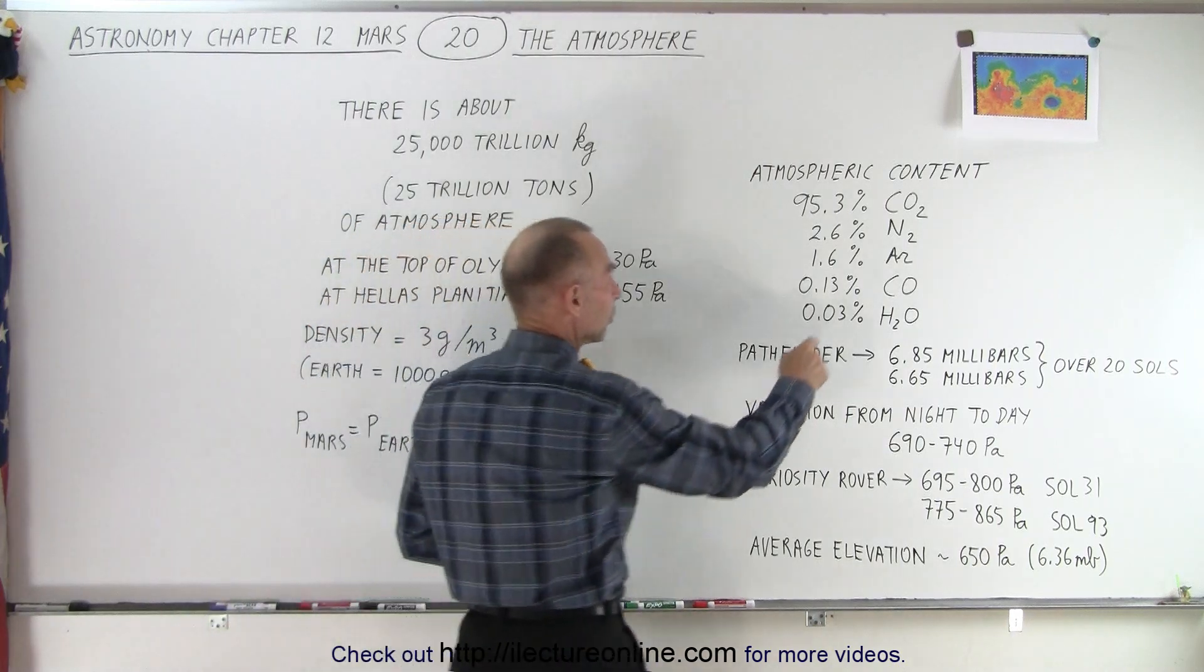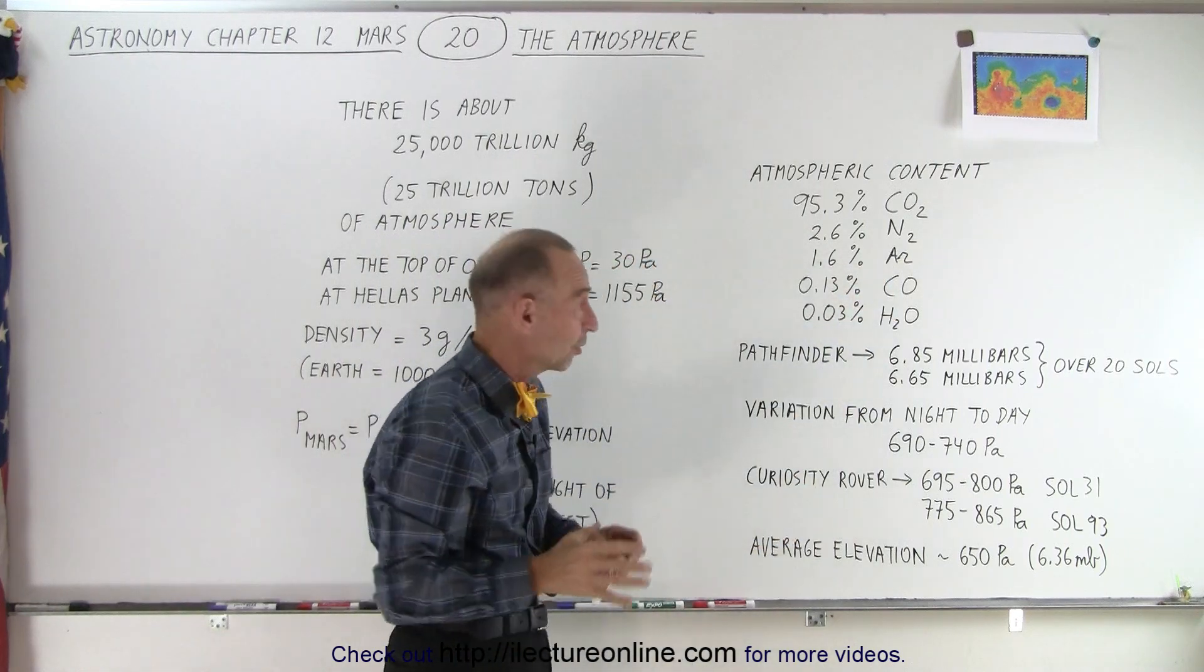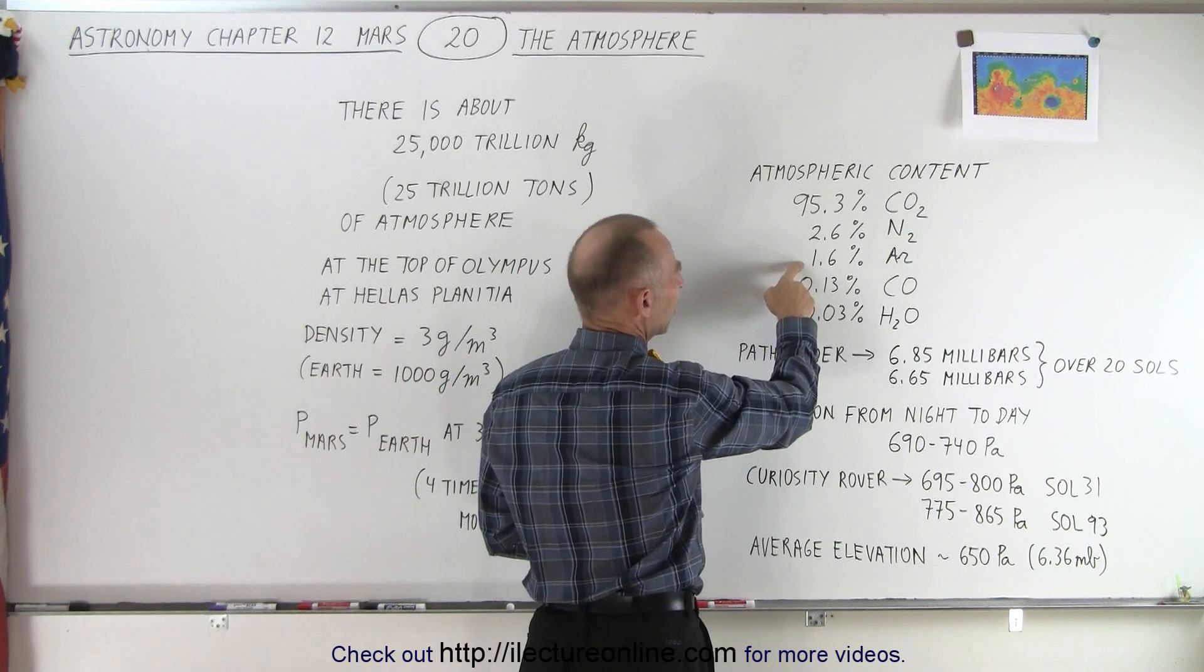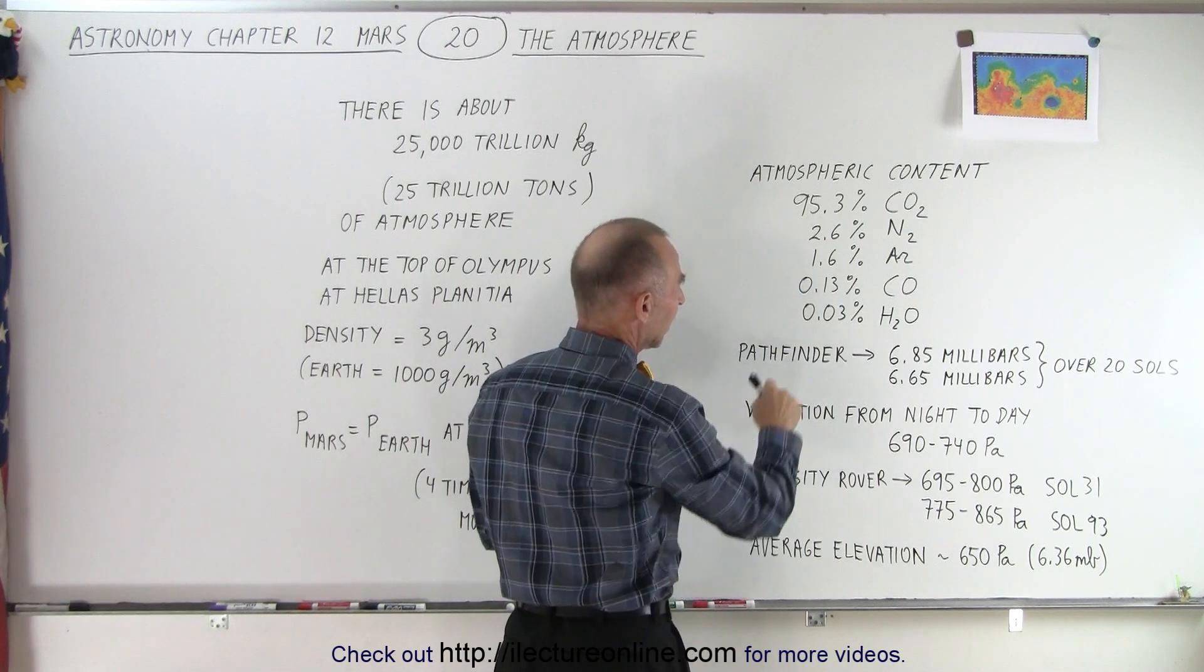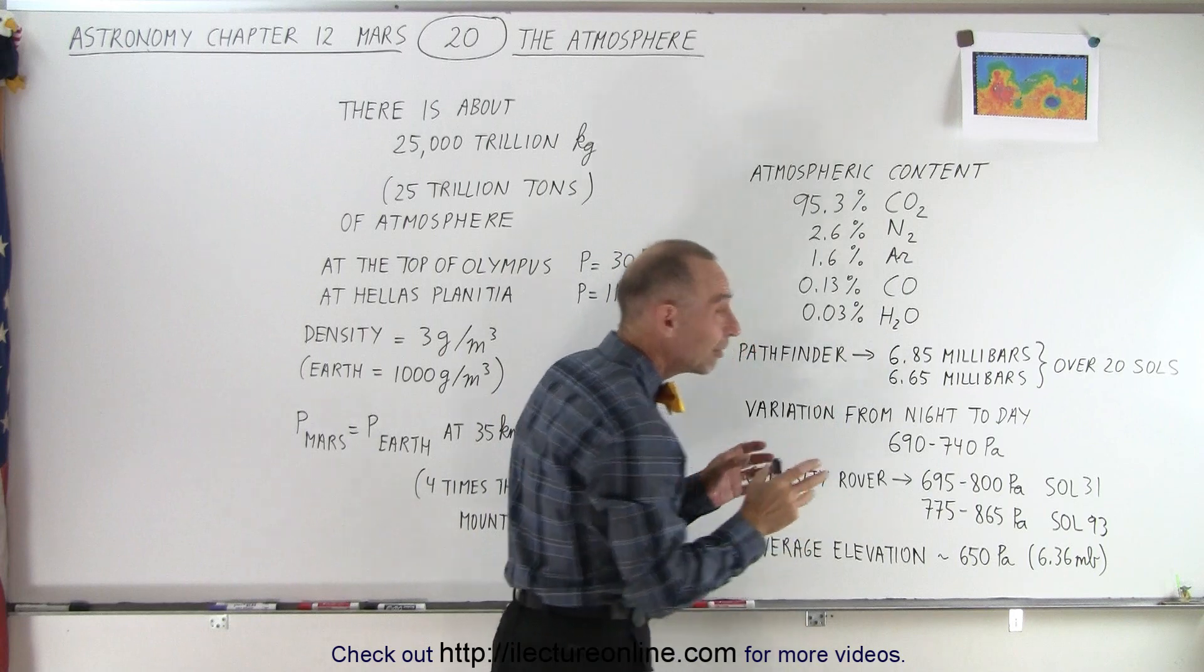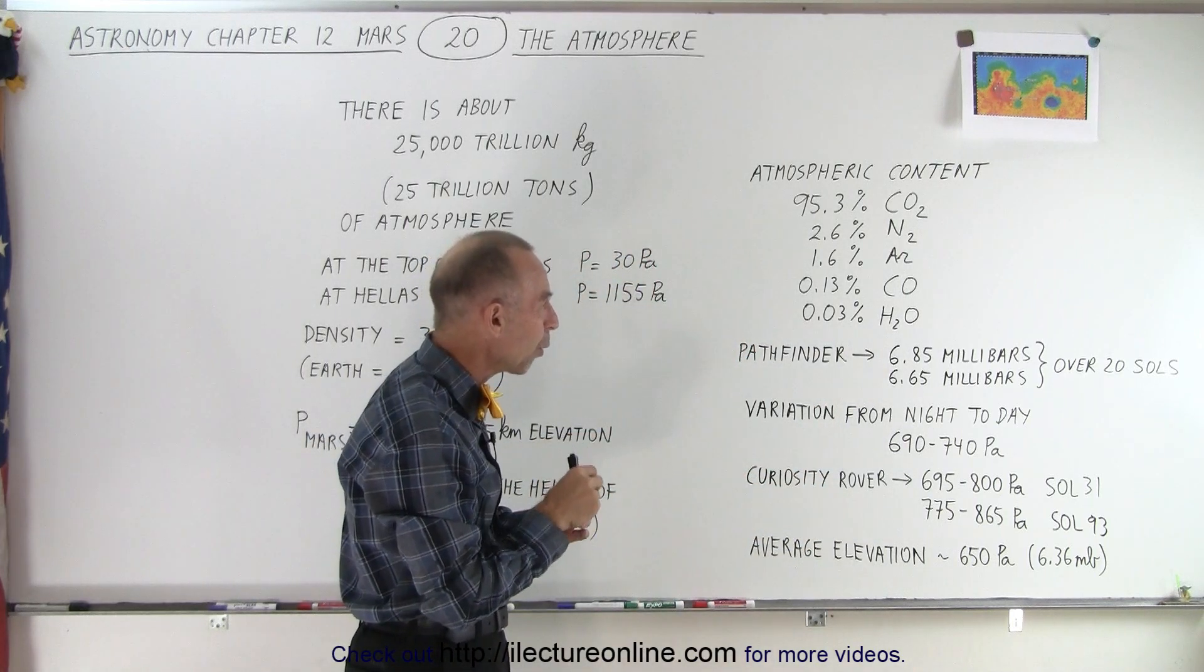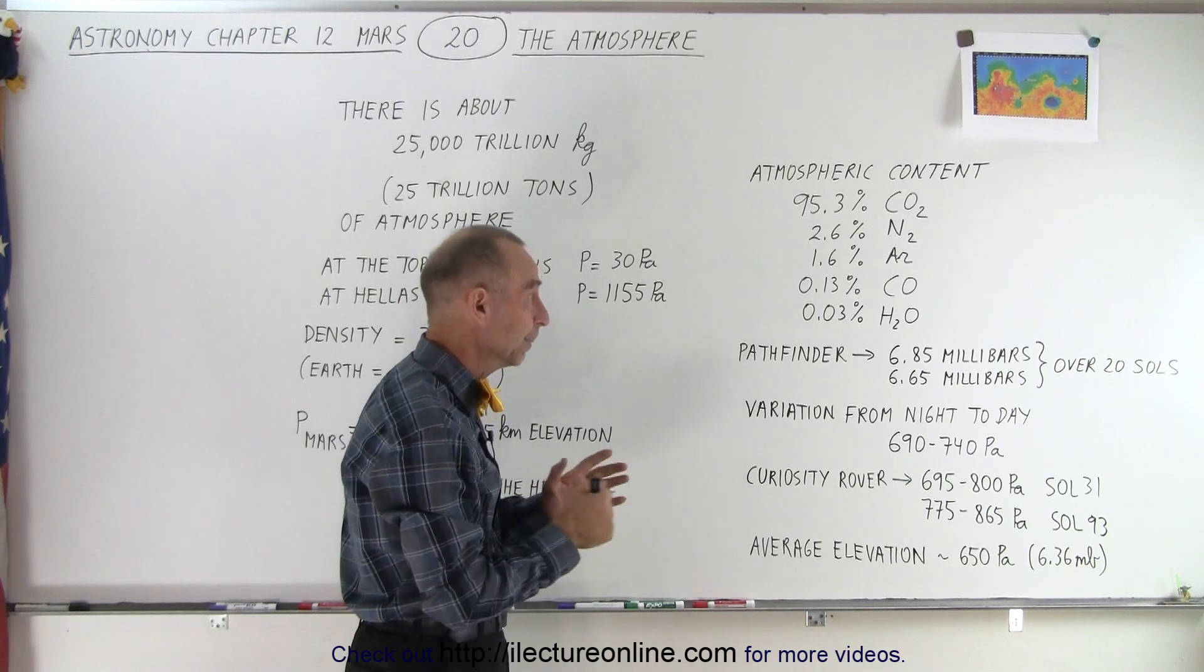Some other components we find: the third most common component is argon, which is the same for the Earth. The Earth has about 1% argon, and Mars has about 1.6% argon. The fourth component is carbon monoxide at 0.13%, and interestingly enough, there's a very tiny amount of water vapor in the atmosphere at about 0.03%. It's probably mostly in frozen form, but it's there.